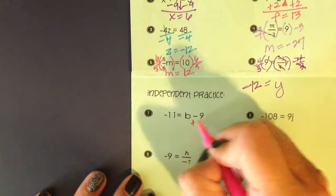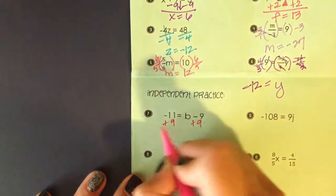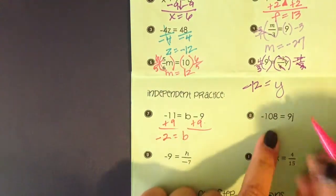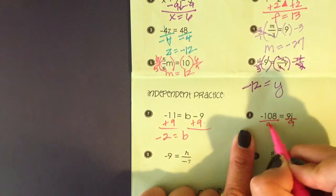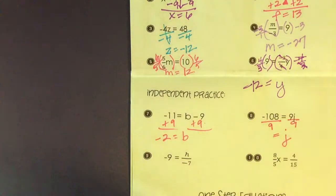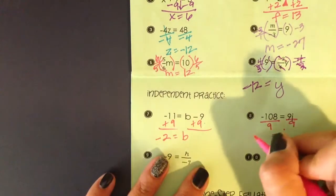Number 7, you should have added 9 to both sides. B is going to equal negative 2. In number 8, you should have divided both sides by 9. J is going to equal, I think it is 12. Let me double-check. Negative 108 divided by 9, yeah that was negative 12.